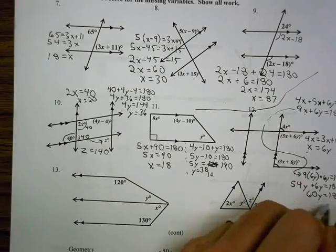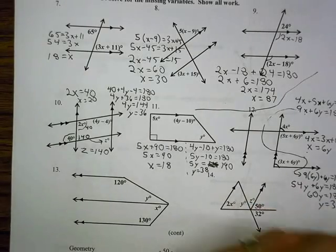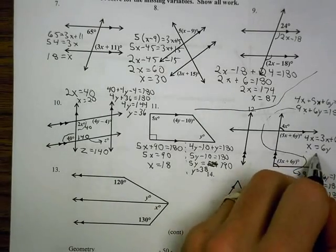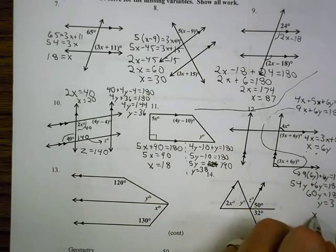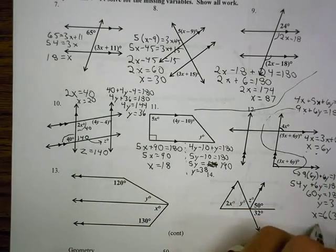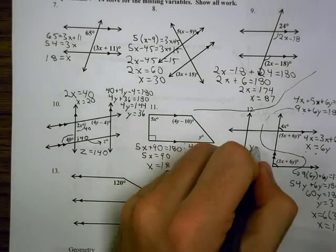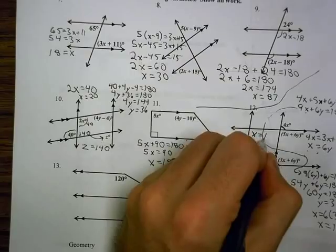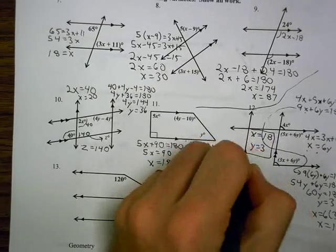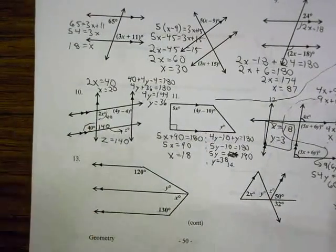Ultimately it becomes 54y plus 6y equals 180. 60y equals 180, so y is 3. I go back up here and plug that in. x equals 6 times 3, so it is 18. I guess you can see why we actually have to do this on a separate sheet of paper so we can fit it all in there. But we got what we needed.